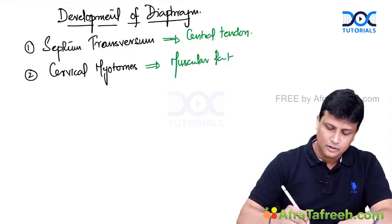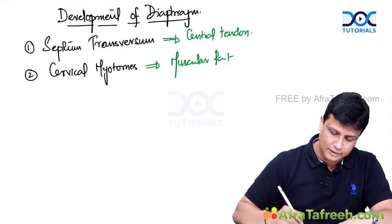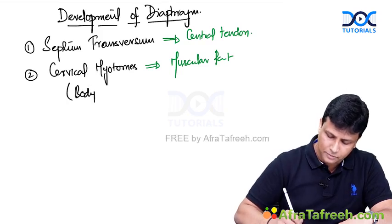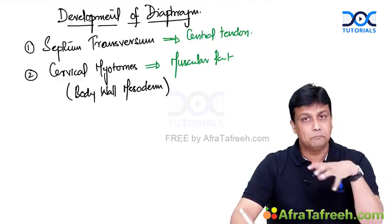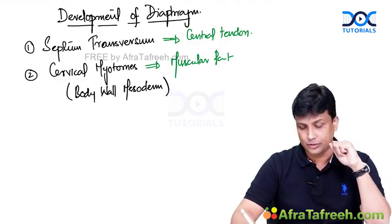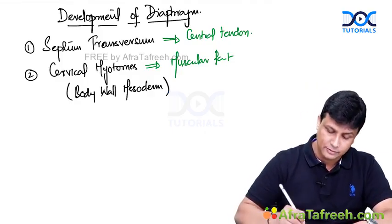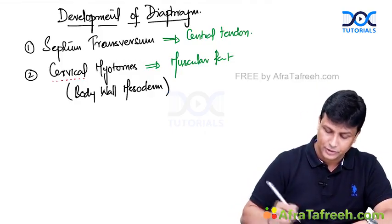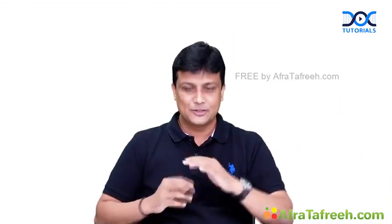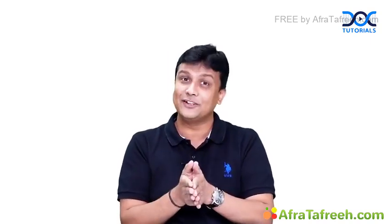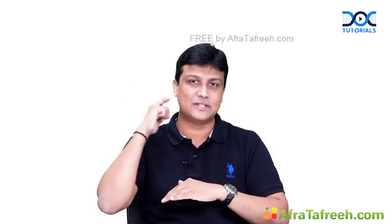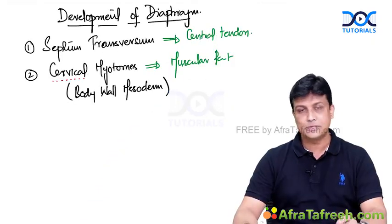The important thing here: myotome is nothing but mesoderm, so we can also call it body wall mesoderm. Please do not get confused if these different words are used in the exam — body wall mesoderm is nothing but the cervical myotomes forming the muscular part. My focus is on the word 'cervical.' The nerve supplying the diaphragm is the phrenic nerve, which originates from C3, C4, and C5 — and that gives you the hint that yes, cervical myotomes are contributing.